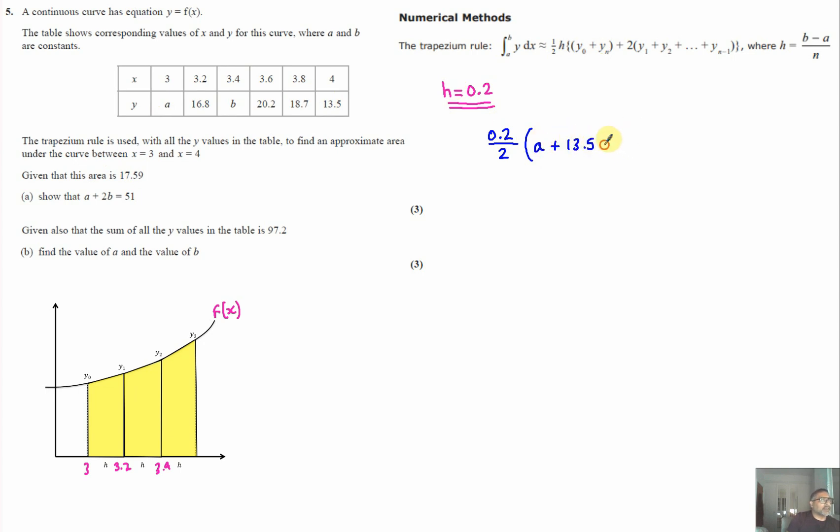So it's a plus 13.5 plus 2 times 16.8 plus b plus 20.2 plus 18.7, all equal to 17.59.